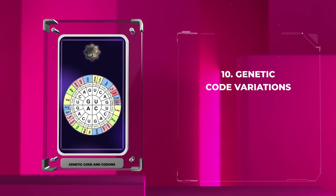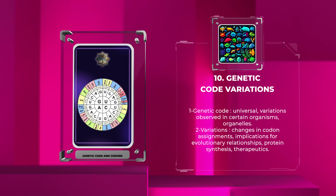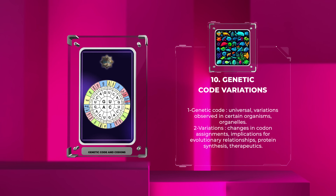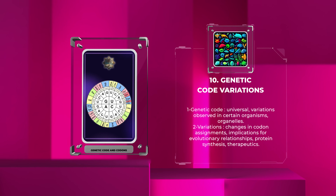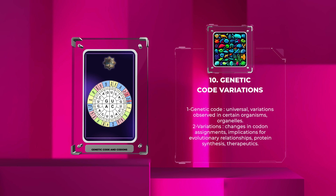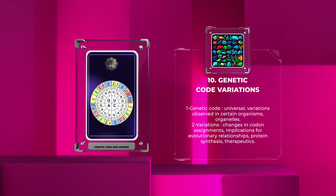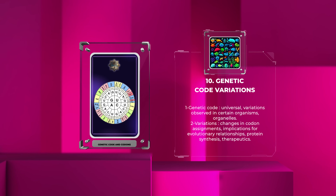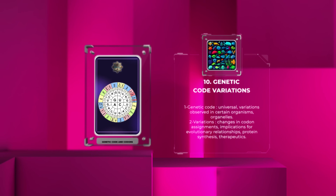While the genetic code is universal, there are some variations observed in specific organisms or organelles. For example, the mitochondria and some bacteria use slightly different genetic codes than the universal code found in the nucleus of eukaryotes. Variations in the genetic code often involve changes in the assignment of codons to specific amino acids, with implications for understanding evolutionary relationships, protein synthesis, and the development of therapeutics targeting specific organisms.